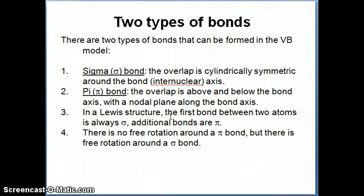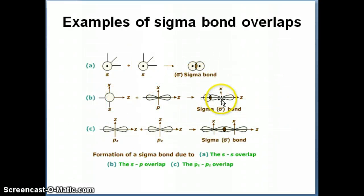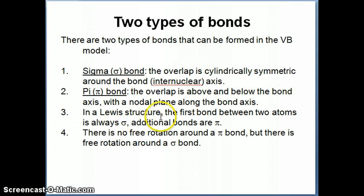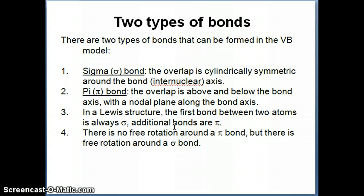How do you determine whether something is a pi bond or a sigma bond without drawing all these structures? The easy way is to draw a Lewis structure. The first bond between two atoms is always a sigma bond, and any additional bond on top of that is a pi bond. So: a single bond is one sigma bond; a double bond has one sigma and one pi bond; a triple bond has one sigma and two pi bonds.